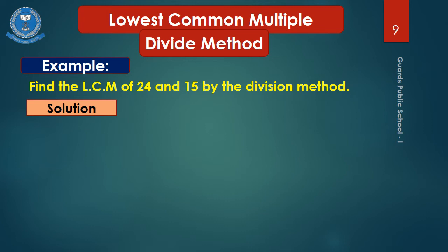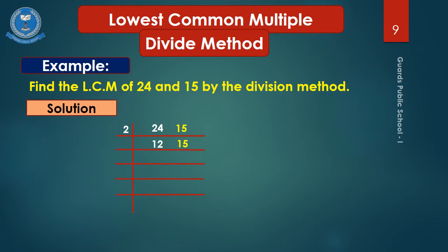In the division method, both numbers are written together in one row: 24 and 15. First of all, we will see which is the smallest prime number. We see that 2 is the smallest — 2 goes into 24 giving 12, but 15 is not divisible by 2, so we write 15 as it is.